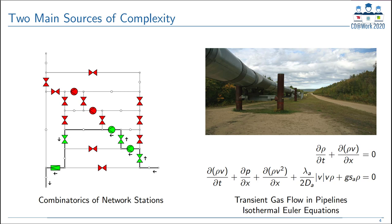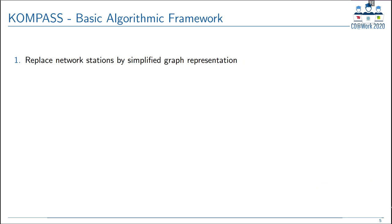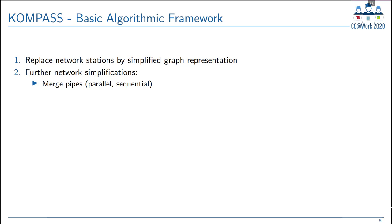Since we identified these two main sources of complexity, we came up with a two-stage approach called COMPASS — Continuierliches Optimierungsmodul zur Prognose abgesicherte Systemsteuerung, or in English: continuous optimization module for prognosis-based system control. In the first stage, we replace the network stations by simplified graph representations, which drastically reduces the number of operation modes. We also simplify the network further by merging pipes: parallel pipes between two nodes are replaced by one equivalent pipe, and sequential pipes through a degree-two node are replaced by one long pipeline.